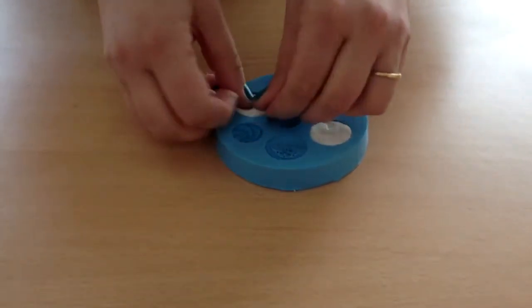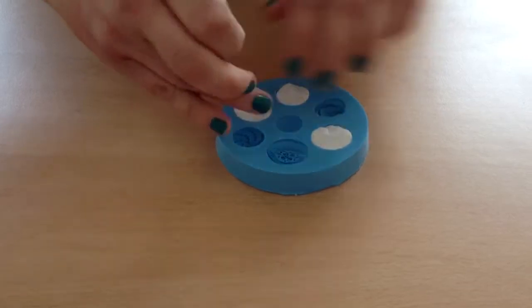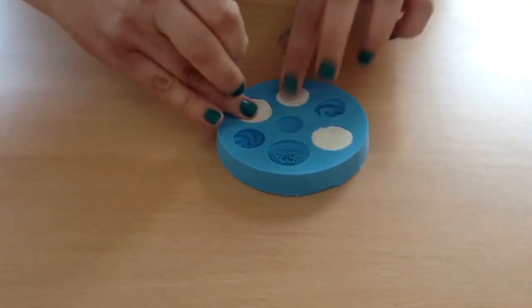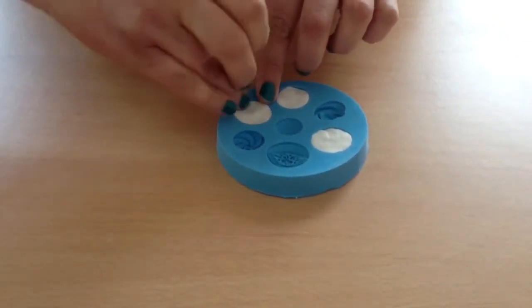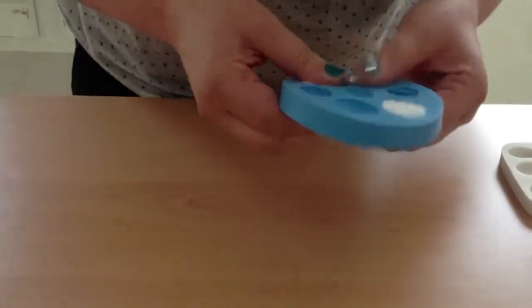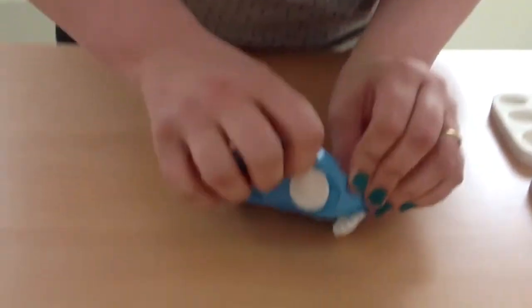So just doing it quickly, pop all your sugar paste in. Make sure you keep it within the rim of the mould just to make sure you get a nice even finish. And out they pop.